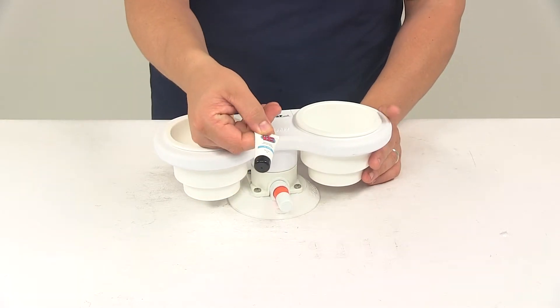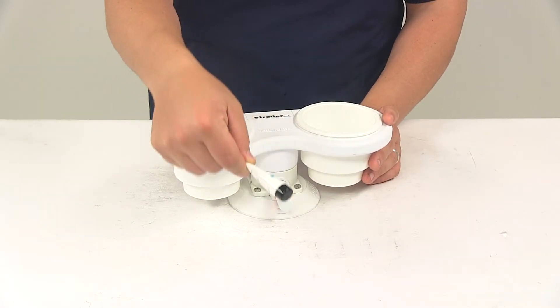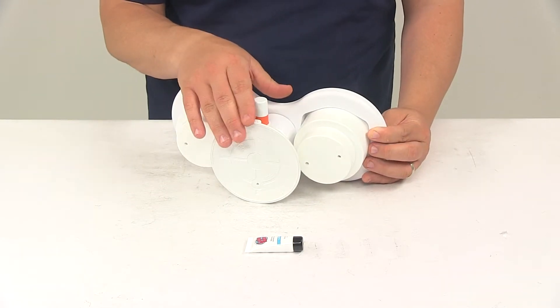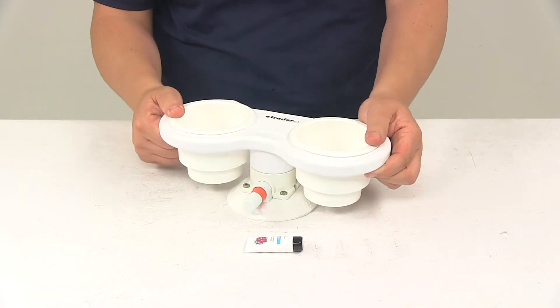The unit comes with waterproof lubricant to keep the SeaSucker components working as they should. When you're ready to install it, you need to make sure that the vacuum mount is clean and that the mounting surface is clean.